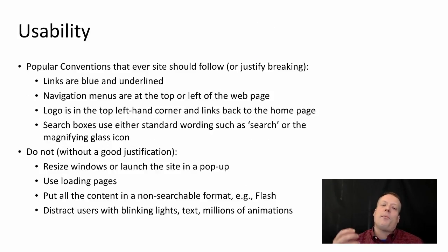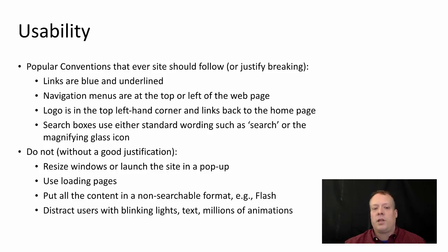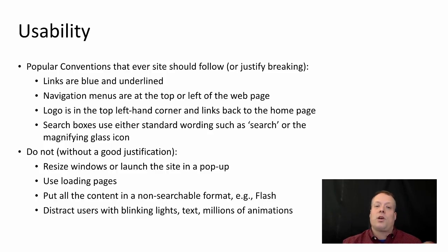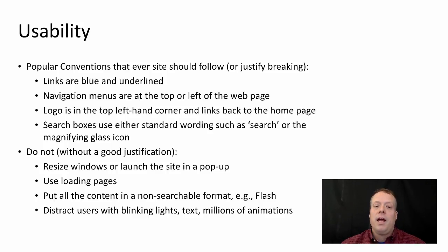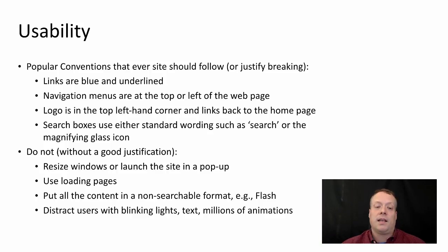On usability: there are a lot of popular conventions that almost every site should follow, or should justify breaking. Links used to always be blue but now they take on different colors characteristic of the particular website — in the example I'm about to show, the links are actually red, but that's for a reason. They're usually underlined to make it obvious where they are. Navigation menus are almost always at the top or left of the page. The logo is almost always in the top left-hand corner and always links back to the homepage, giving the user a safe exit from wherever they are. There's almost always a search box in the upper right corner, using either the word 'search' or a magnifying glass icon.